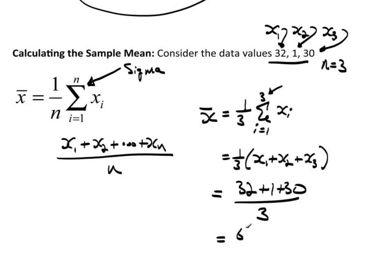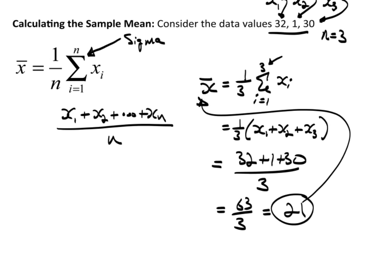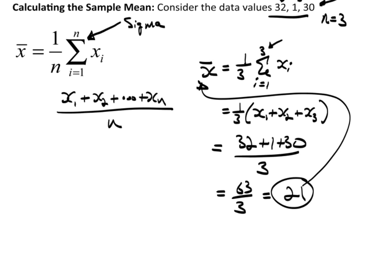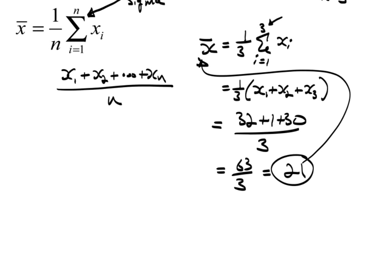Which is 63 divided by 3, which is 21. So the sample average X bar for this data is 21. Now remember I said that the average is a balancing point, so what does that mean? Well, let's just draw a quick number line.